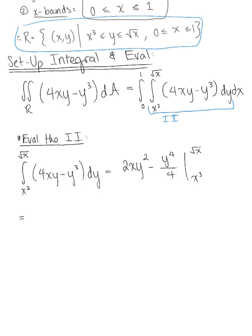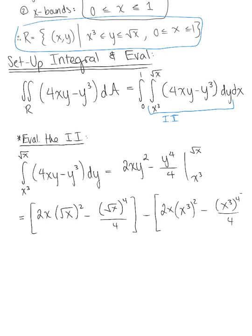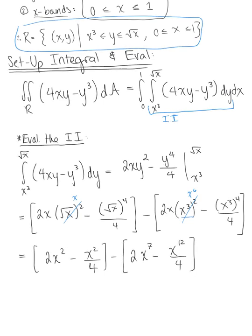And so it's safe to evaluate. So this becomes, we have 2x multiplied by the square root of x squared minus the square root of x to the fourth over 4 minus 2x multiplied by x cubed squared minus x cubed to the fourth by 4. And so we know here that the square root of x squared, or the square root of x squared simply becomes x. So this is 2x squared minus x squared by 4 minus, and looking here we know that x cubed squared, so we're multiplying those exponents here to give us x to the sixth. So x to the sixth times x leaves us with 2x to the seventh minus x to the twelfth by 4, and we want to simplify.